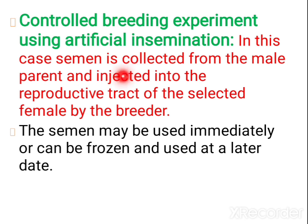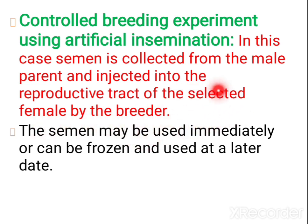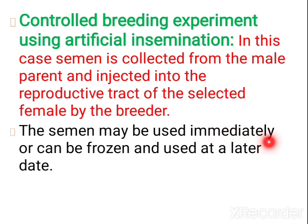In this method, the semen from the male is collected and injected inside the reproductive tract of the selected female. The desired male and the desired female are chosen and artificial insemination is done. The semen collected can be used immediately or it can be frozen and used at a later date.